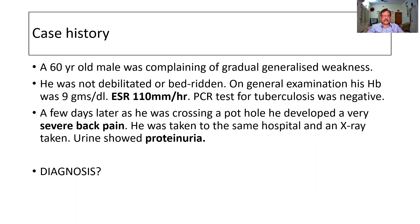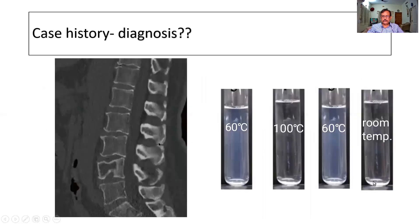What is your diagnosis? Always link certain things and you get the answer. So this is the urine — it was clear. On heating, there was a precipitate. Further heating, it disappeared. And on recooling to about 60 degrees, it reappeared. This is the Bence Jones protein pattern characteristic of multiple myeloma.